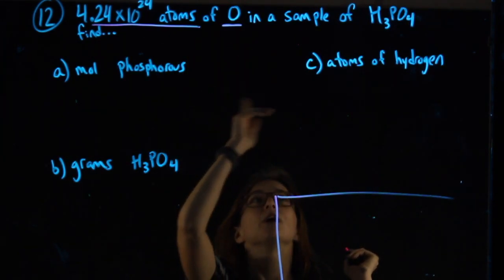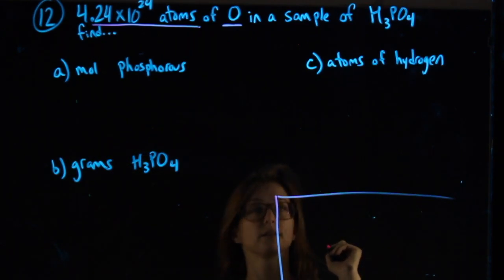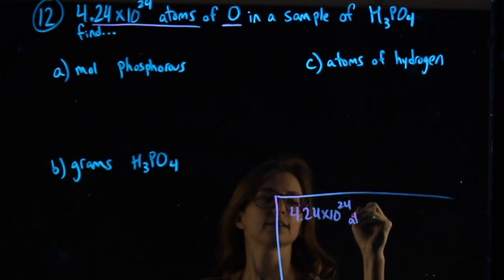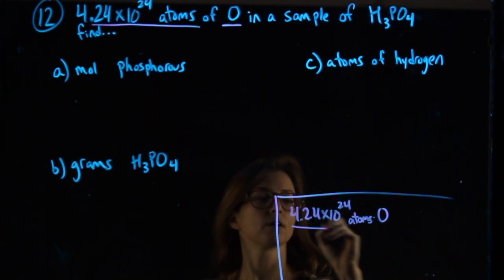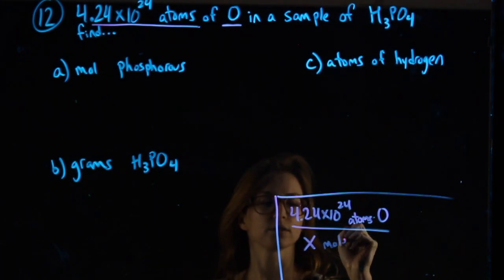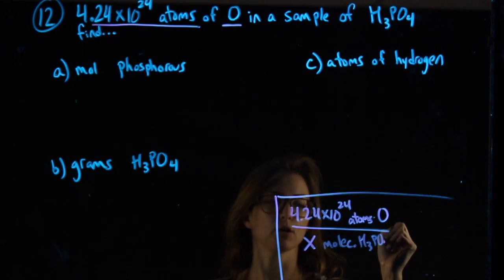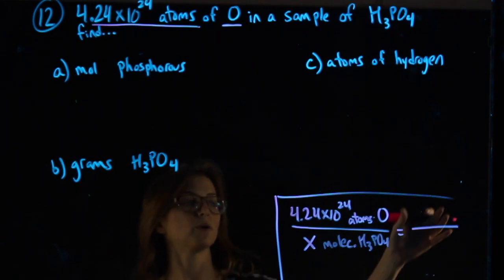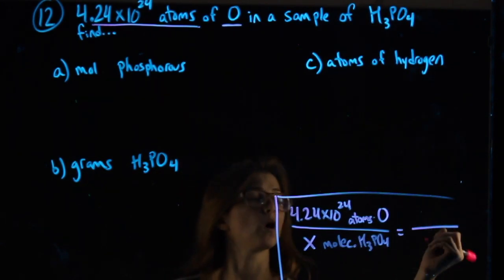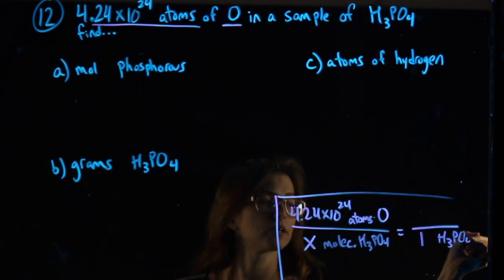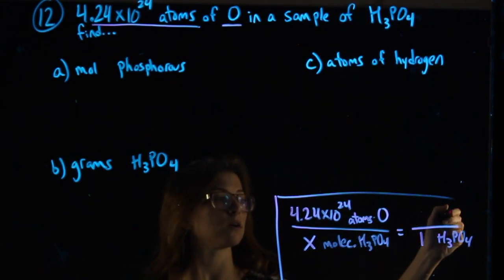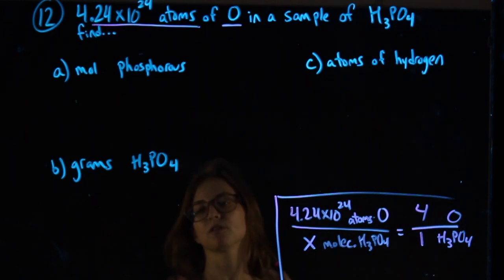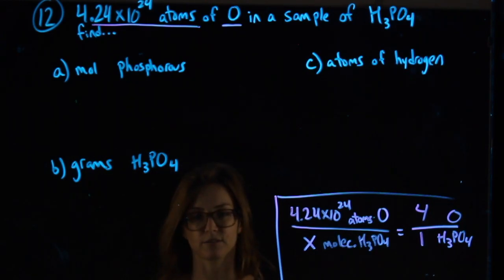I'm going to take my atoms of oxygen and turn it into molecules of the whole thing. I know 4.24×10²⁴ is my atoms of O. What I don't know are my molecules of H3PO4. Atoms and molecules are proportional to how many atoms in one molecule. Always a 1 before the molecule. So in 1 H3PO4, how many O's are there? 4. Solving this will get me molecules of the whole thing, and from there there are a lot of different places I can go.